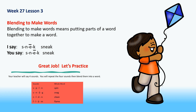Blending to make words means putting parts of a word together to make a word. S-N-E-K — sneak. Do you hear the different parts of the word sneak? Repeat after me: S-N-E-K — sneak. Very good.